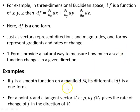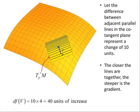Examples: If f is a smooth function on a manifold M, its differential df is a one-form. For a point p and a tangent vector V at p, df(V) gives the rate of change of f in the direction of V.